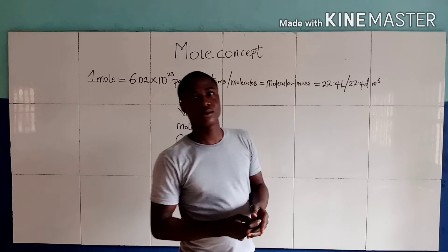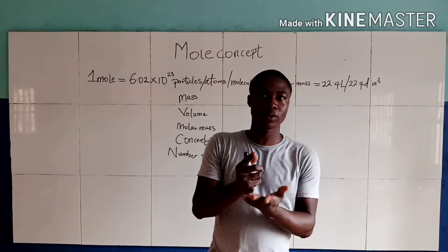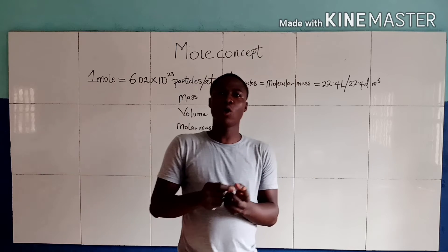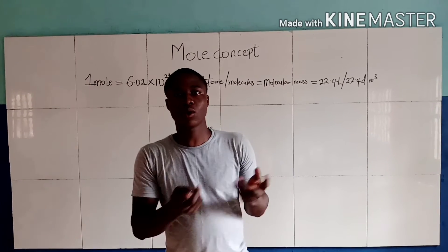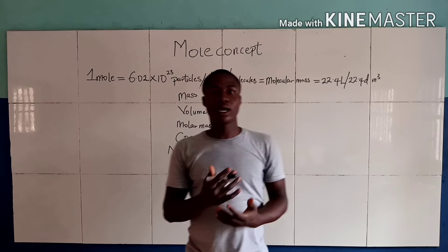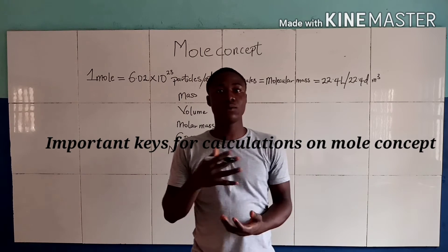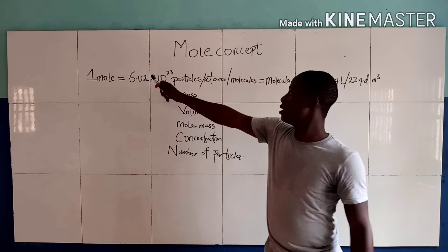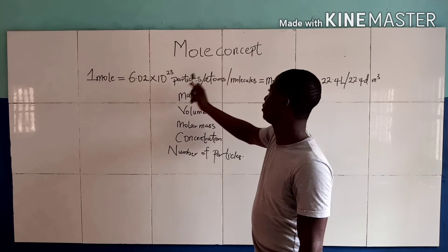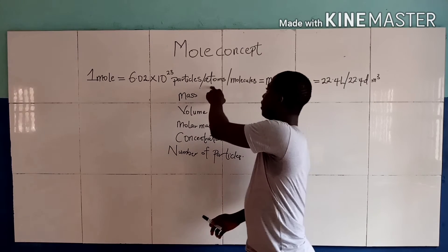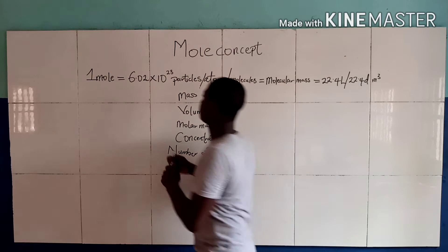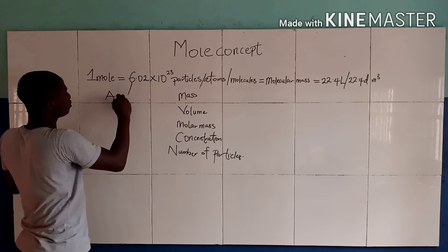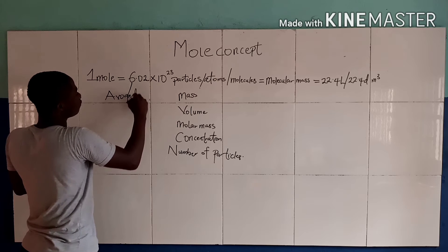One mole of a substance is the amount of that substance containing as many elemental entities as the number of atoms in exactly 12 grams of carbon-12 isotope. One mole of a substance equals 6.02 times 10 to the power of 23 particles, which are also called atoms or molecules. This value, 6.02 times 10 to the power of 23, is called Avogadro's number.